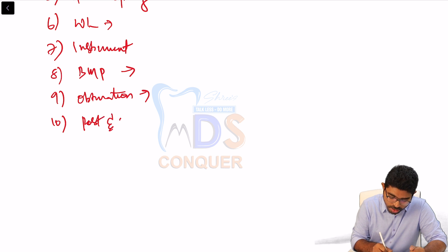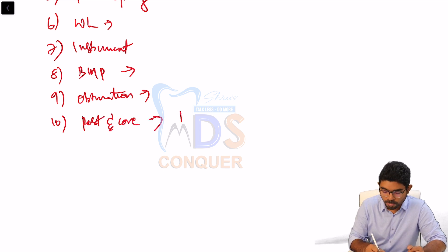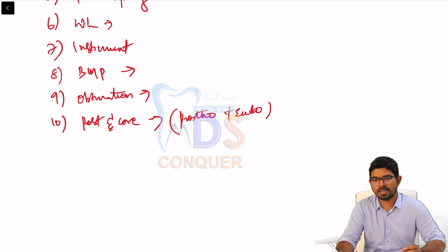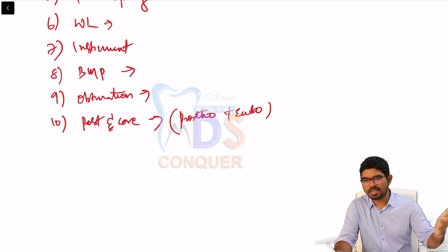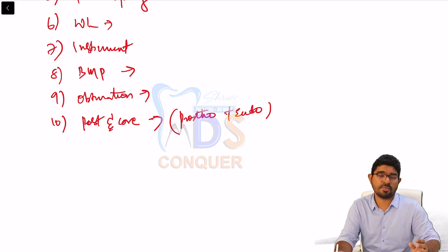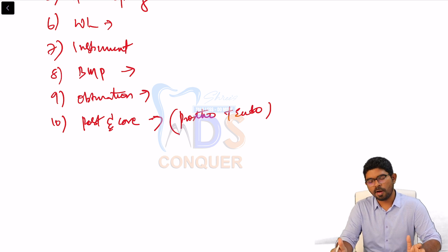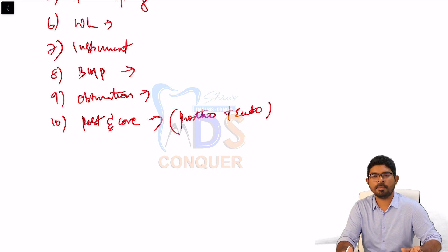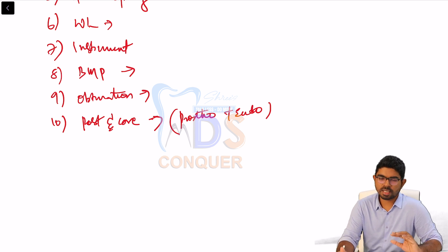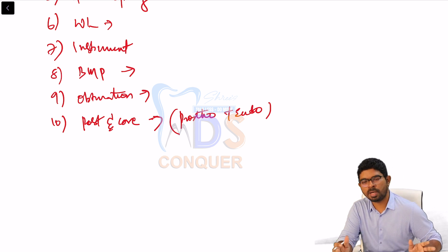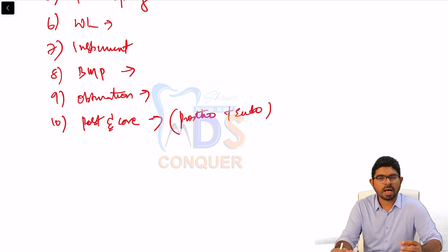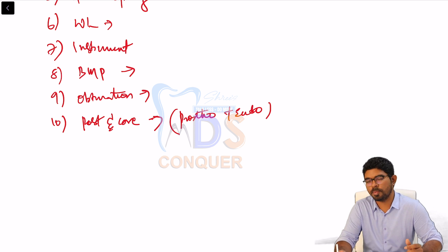Post and core is covered in both Prosthodontics and Endo. Learn recent post and core techniques — different types and shapes of metal posts: tapered post, serrated tapered post, parallel post, non-parallel post. These are frequently repeated as diagram-based questions in INICET. Also learn about recent posts — which mimics the coefficient of thermal expansion of dentin. There are one or two questions on recent advances that UG students may be less familiar with.